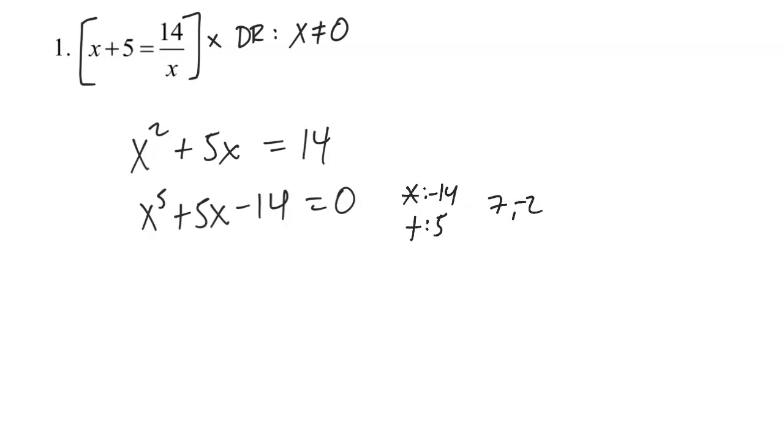Okay, so because the lead coefficient here is a 1, that means I can shortcut the factoring work here and just write this as x plus 7 and x minus 2, which is going to give me the two solutions, positive 2 and negative 7.